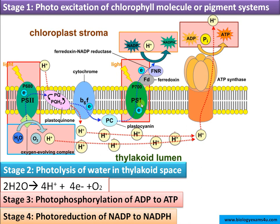At the end of the light-dependent reaction, the energy of sunlight received by the photosystems is converted into chemical energy in the form of ATP and NADPH. These two energy-rich molecules will be used in converting CO2 to glucose (C6H12O6) in the Calvin cycle or C3 cycle, which will be discussed in the next video. These are the four stages of the light-dependent reaction of photosynthesis — remember all these things may be happening simultaneously.